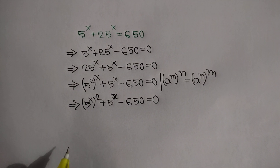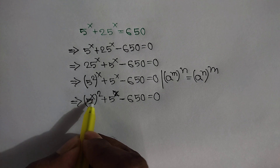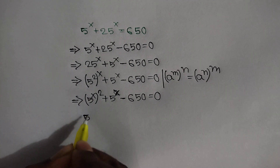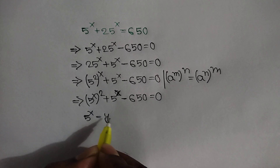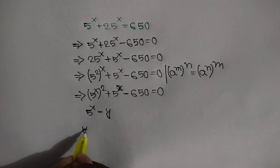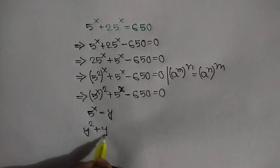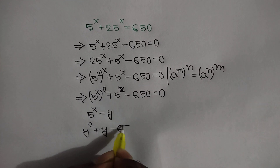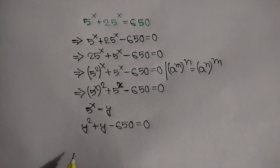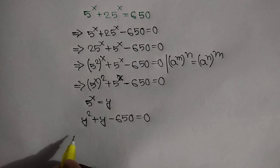Now, let's set 5 to the power x equal to y. So we can write y squared plus y minus 650 is equal to 0. Now we can apply the middle term breaking rule.